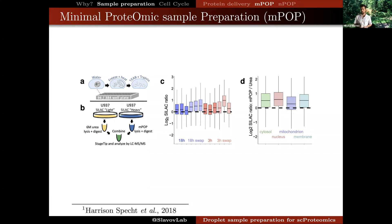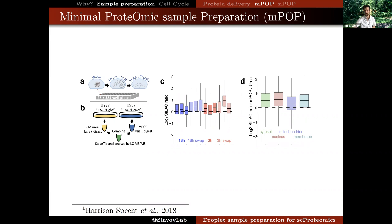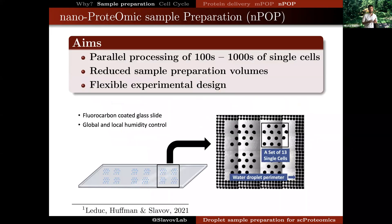We have used MPOP for a number of different projects in our group and we continue to use it. It can be fully automated and it's relatively high throughput. A number of colleagues have adopted it, including the labs of Roman Zubarev, Akos Vegvari, and Erwin Skouf. While MPOP provides one solution, we have been interested in further increasing the throughput and reliability of sample preparation while reducing the volumes, and in particular being able to process many hundreds or even thousands of single cells in parallel to reduce batch effects.